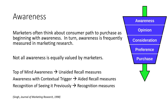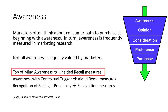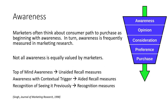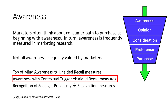For marketers, we usually think about consumer awareness in three different tiers. First, there's top-of-mind awareness — this is where there is no real external trigger, but rather it just emerges from someone's mind that they have familiarity with something. This is measured using what we call unaided recall measures. Next, some sort of contextual trigger in the environment or prompt from another individual or stimuli evokes someone's ability to recall and be aware of a phenomenon or thing.